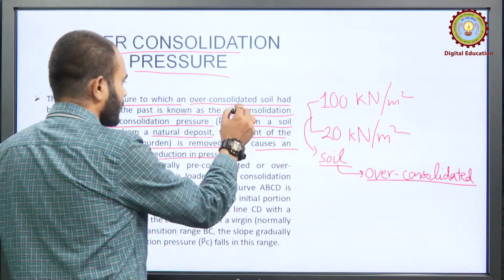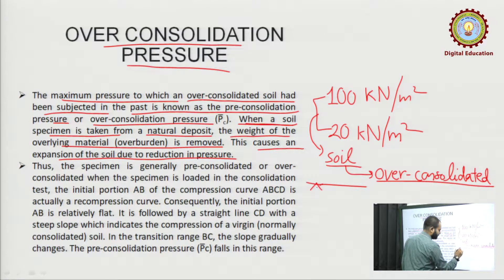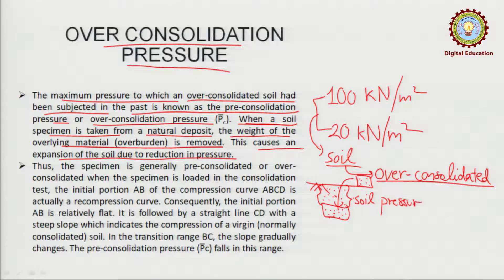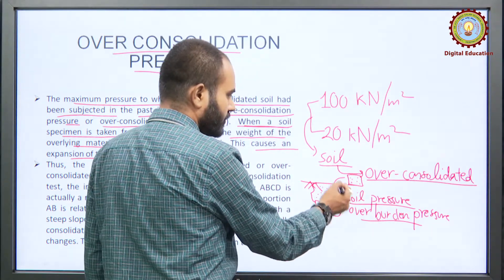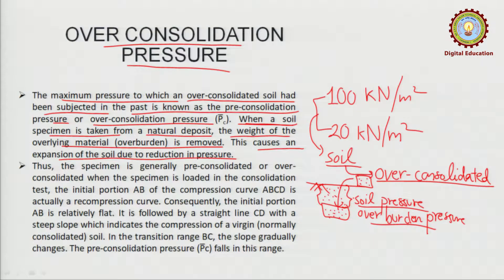Talking about field conditions: when soil is taken out from the natural deposit, suppose this is your ground and some soil was here. When we dig it out, this much soil pressure — or overburden pressure — gets reduced as soon as we take it out. As this pressure has reduced, this soil will tend to expand.